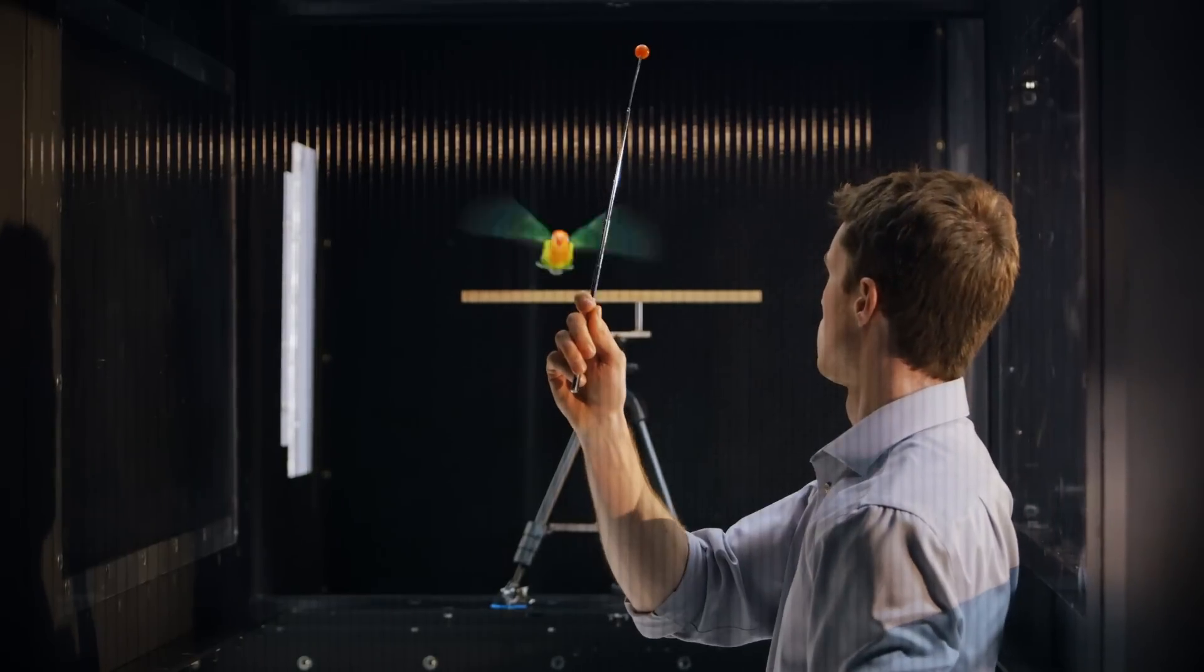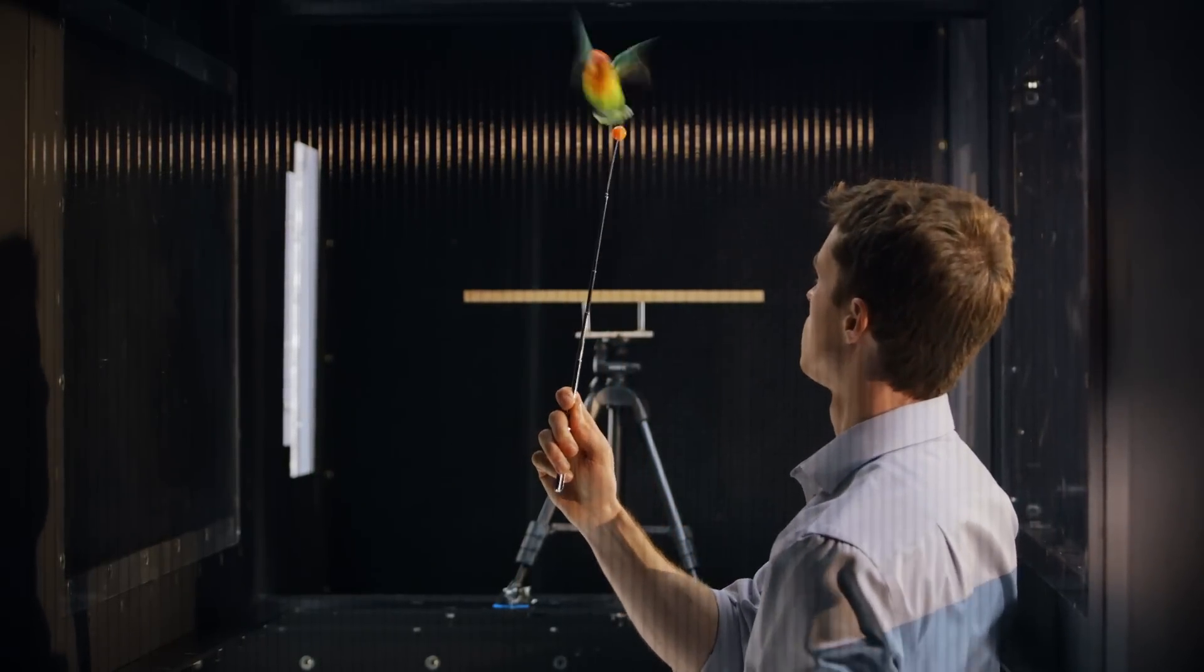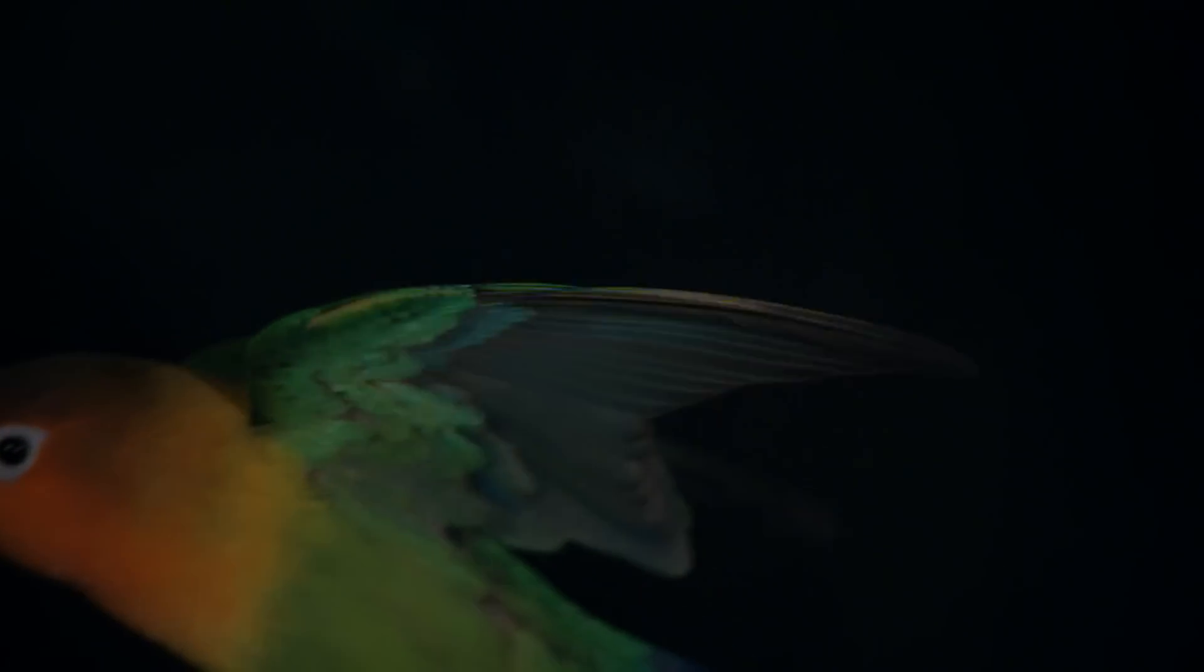Birds are masters of maneuverability in ways that we are only beginning to understand. Birds can dramatically change the shape of their wing almost instantly and respond in that way very quickly to flying in turbulence, avoiding obstacles, and also flying very effectively over long distances.